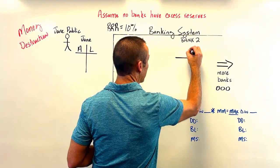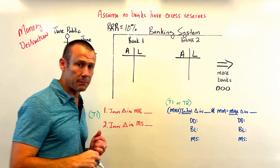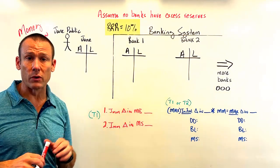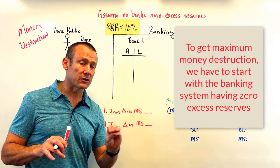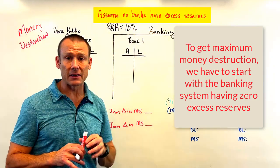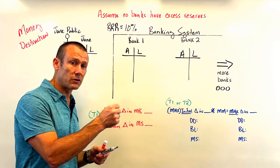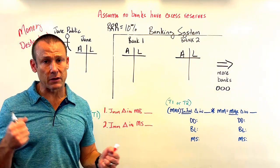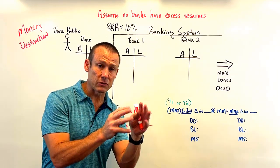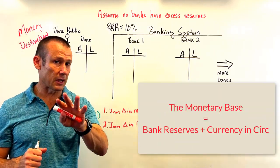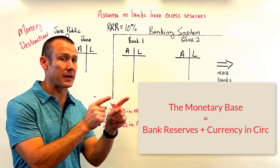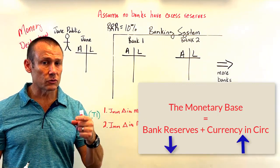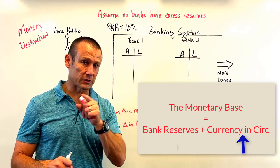In this scenario, Jane makes a withdrawal of $1,000 and the required reserve ratio is 10%. To get maximum money destruction, we assume no banks have excess reserves. Jane walks in, the bank hands her $1,000 in currency, and that currency goes from being bank reserves to currency in circulation — no change in the monetary base, but the composition changes: bank reserves go down, currency in circulation goes up.